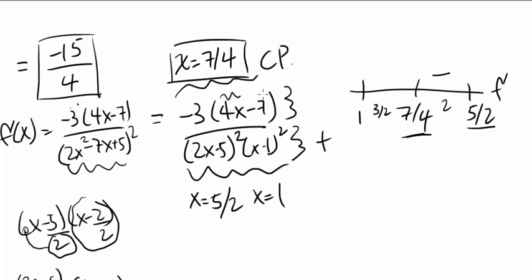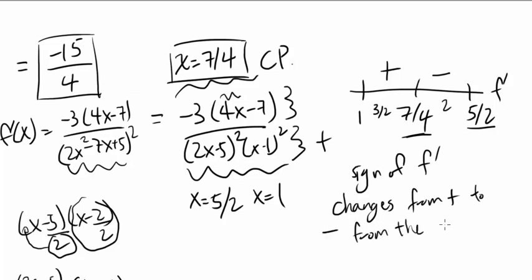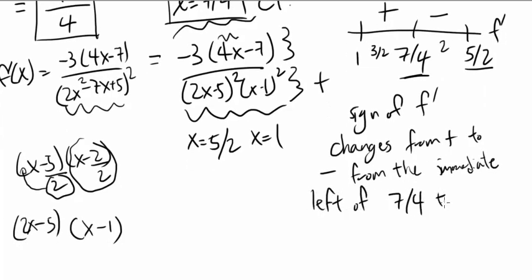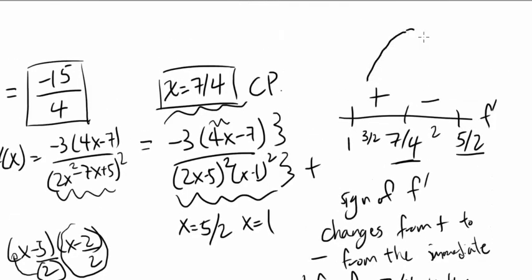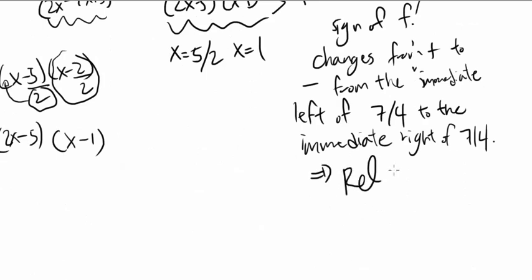A value between 1 and 7 over 4 is 3 over 2. Plugging this in, 3 over 2 times 4 is 6, minus 7 is negative 1. Negative times negative is positive. So the sign of f prime changes from positive to negative from the immediate left of 7 over 4 to the immediate right of 7 over 4. If the function is increasing to the left and decreasing to the right of 7 over 4, you got relative maximum at 7 over 4. That's our answer for B.